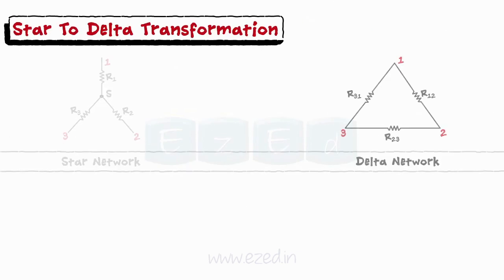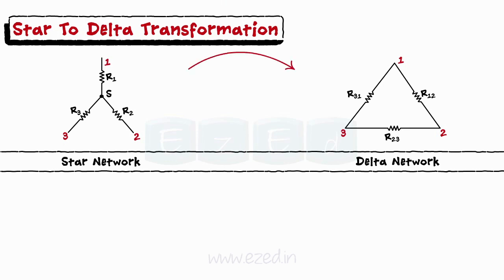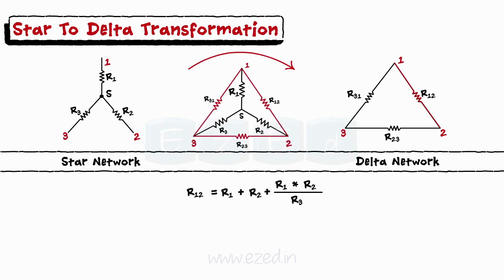In the similar way, we can convert star structure into delta structure. The delta resistance between terminals 1 and 2 is calculated as R12 equals R1 plus R2 plus R1 into R2 upon R3. Now, to find the delta resistance, we consider both the suffixes as two resistors.